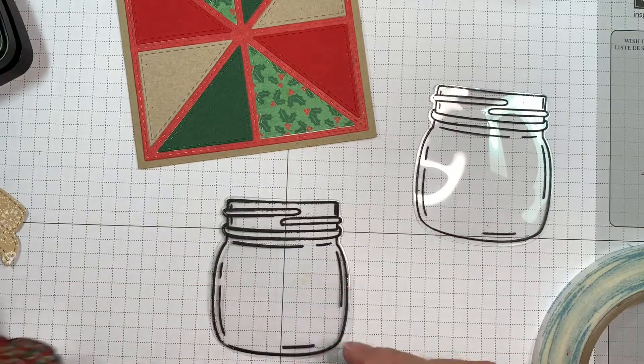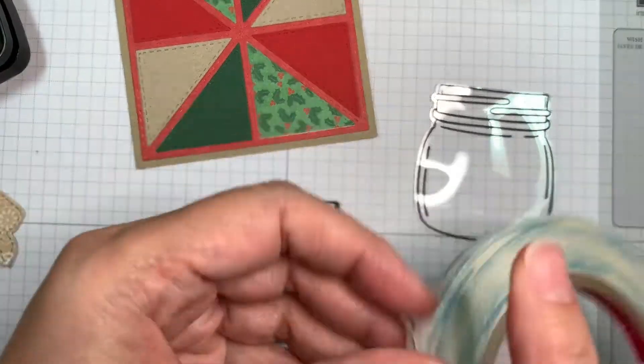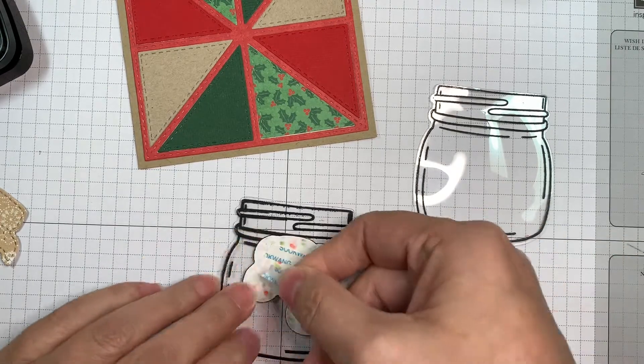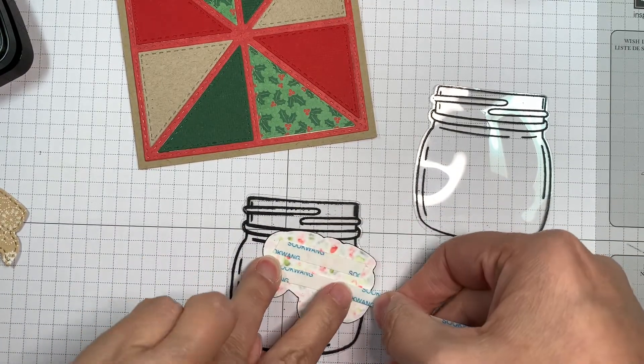Those are the two images that I stamped and heat embossed. And I did cut them out using my Gemini machine. You just got to run it through a few times because it's cutting through the window plastic.